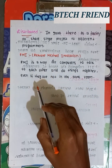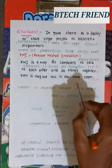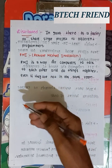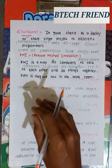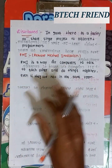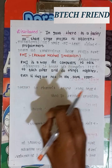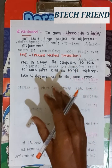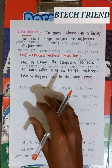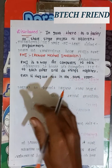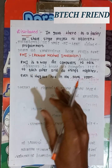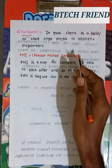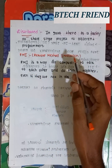RMI is a way for computers to talk to each other and do things together, even if they are not in the same room. RMI enables a relationship between computers to work together remotely.